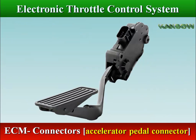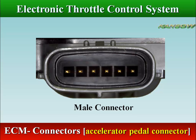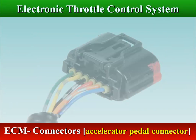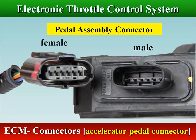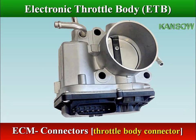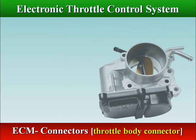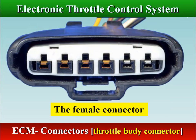The accelerator pedal connector contains six pins: four pins that provide DC power to the two independent sensors, and two pins that carry the output signal from the two independent sensor circuits. The male connector is attached to the accelerator pedal, and the female connector is attached to the connecting wire harness. The throttle body connector contains six pins: four gold-plated pins for the signal and two tin-plated pins for the power terminals. The male connector is attached to the throttle body, and the female connector is attached to the connecting wire harness.